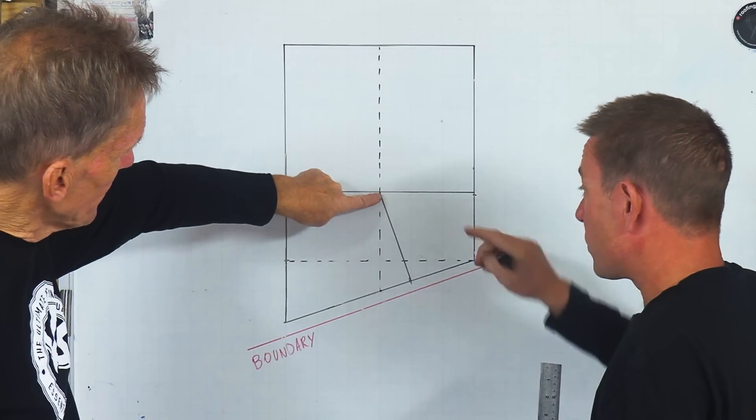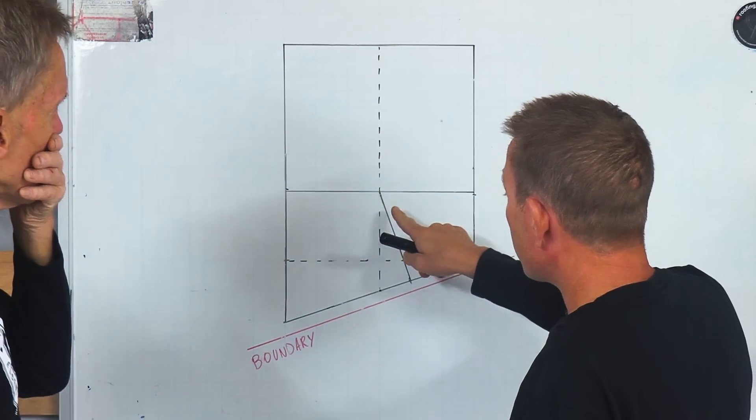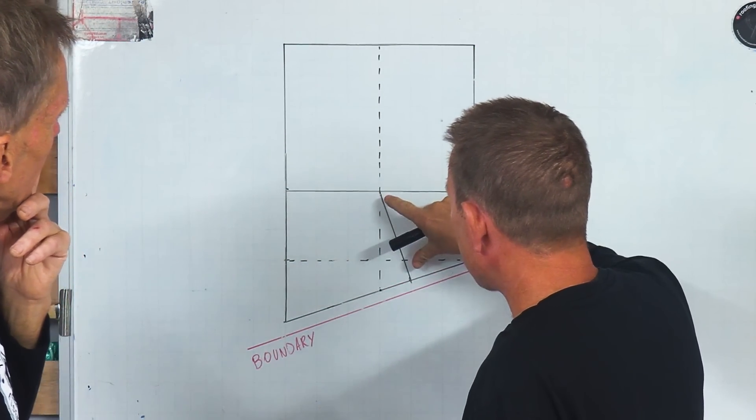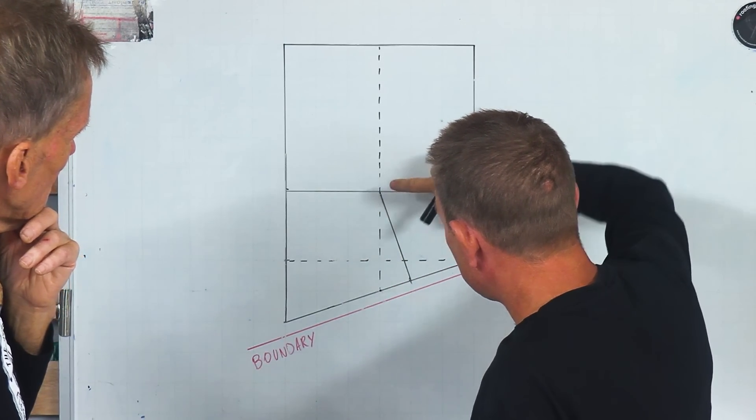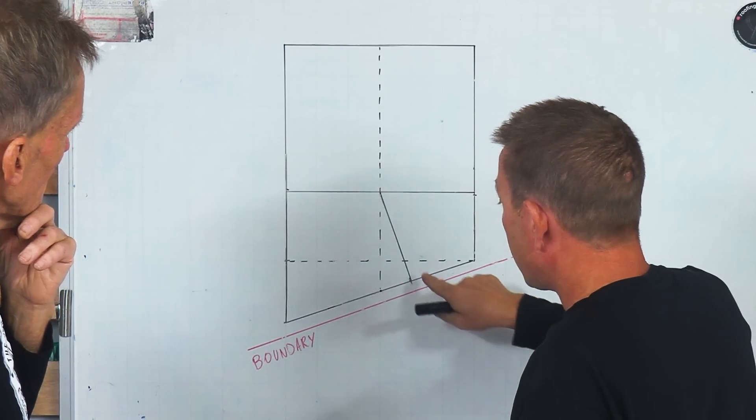So is the ridge staying where the ridge is or what? The ridge finishes there. That's where the ridge finishes. Okay, got it. On a conventional hipped roof, this end common rafter would be square there.